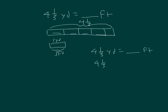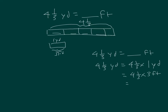Four and a third yards equals four and a third times one yard, equals four and one-third times three feet. We're going to rewrite four and a third as an improper fraction: thirteen-thirds. So thirteen-thirds times three feet — the threes cancel, and you get thirteen feet. Four and a third yards equals thirteen feet.